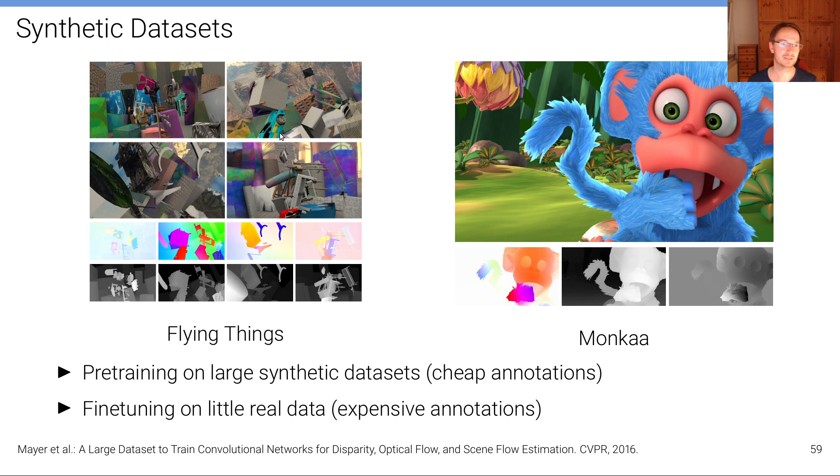And the reason for this is that these models are able to generalize well. These matching problems are able to generalize reasonably well. So here in this case, this is a dataset called Flying Things where just random assets have been downloaded from the internet.